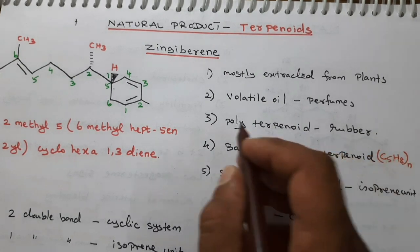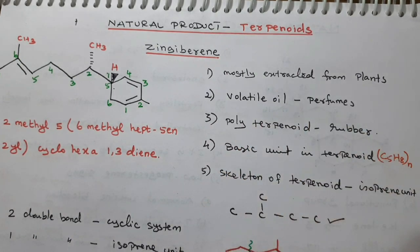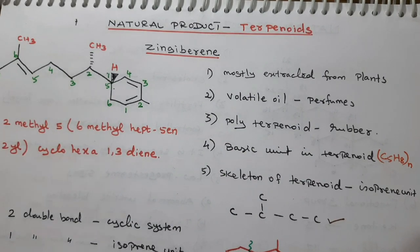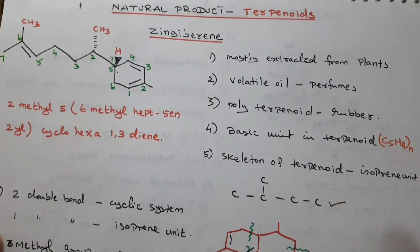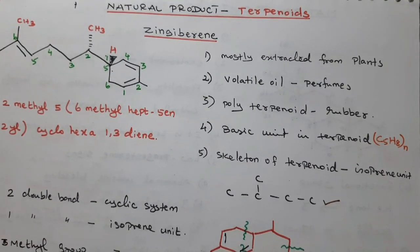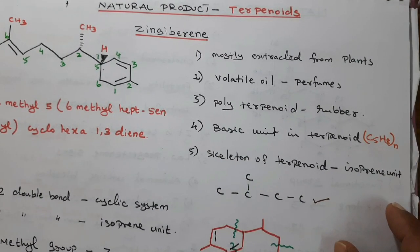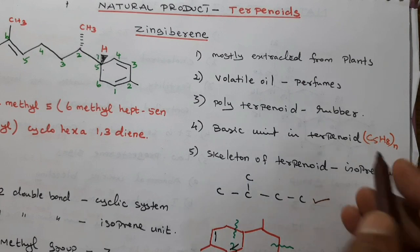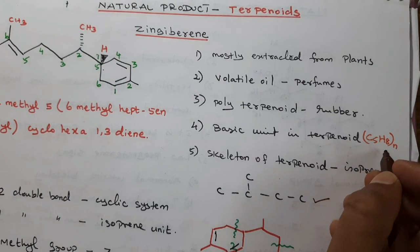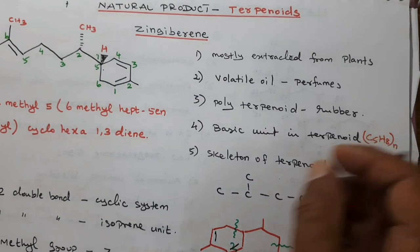This is rubber. It is one of the polyterpenoids, so it is a terpenoid — that is, a polyterpenoid — because rubber is a polymeric compound. The basic unit is one terpenoid unit, which is C5H8. That is the basic unit.